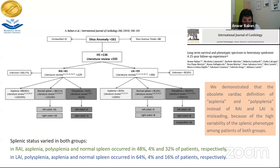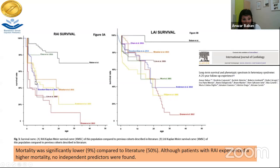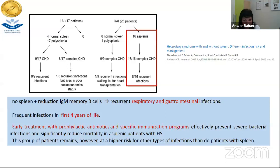Regarding long-term survival and freedom from heart transplant, it reached 70% for right atrial isomerism and 87% for left atrial isomerism. Comparing to Kaplan-Meier curves from previous studies, we identified significantly lower mortality in our cohort — probably due to experience, surgical competence, improvement in ICU management, and the very important immunological surveillance. We reported that early treatment, prophylactic antibiotics, and a specific immunization program can reduce mortality in asplenic patients with heterotaxy.